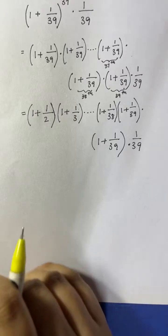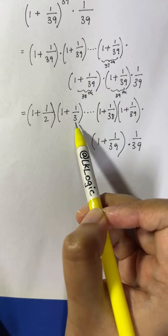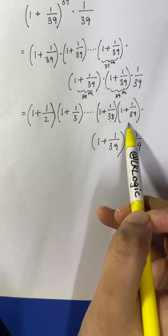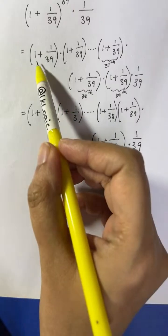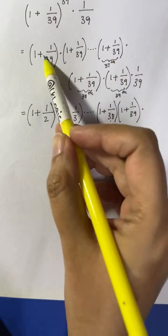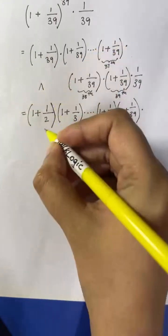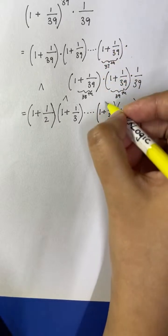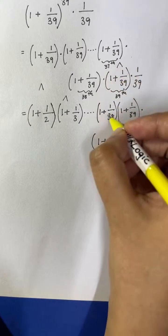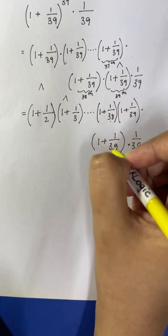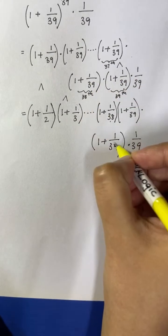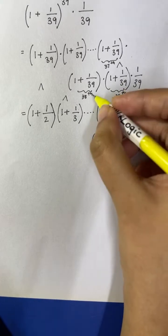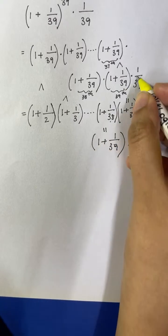Now, as you have written this, you can see 39 is greater than 2, greater than 3, and until here it's greater than 38, and it's equal to 39. When you compare the whole term, (1 + 1/39) is lesser than each earlier bracket — the 37th term, the 38th term is equal, and (1 + 1/39) is equal to the 38th term. And 1 over 39 is equal to this last term.